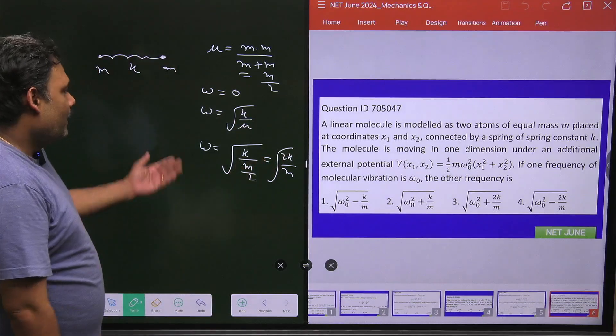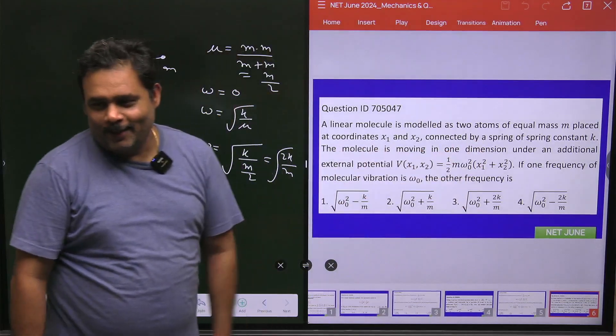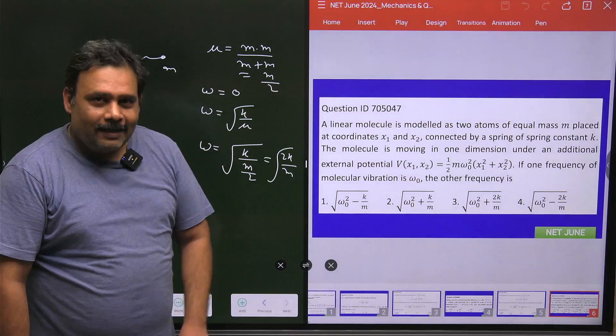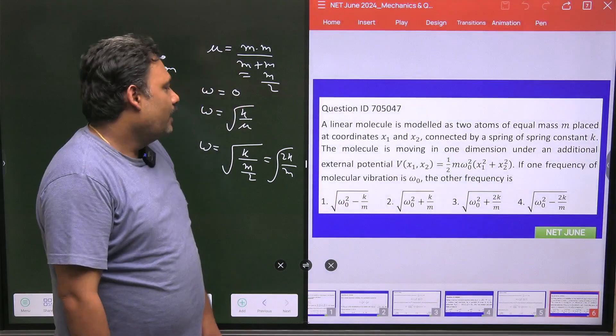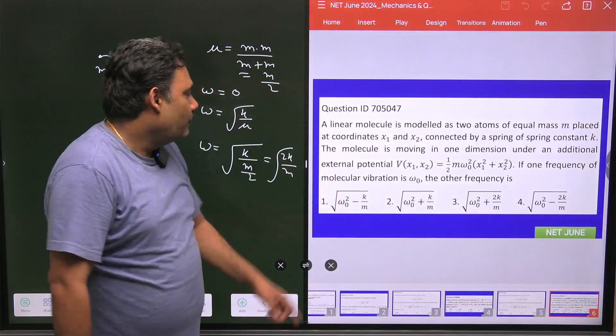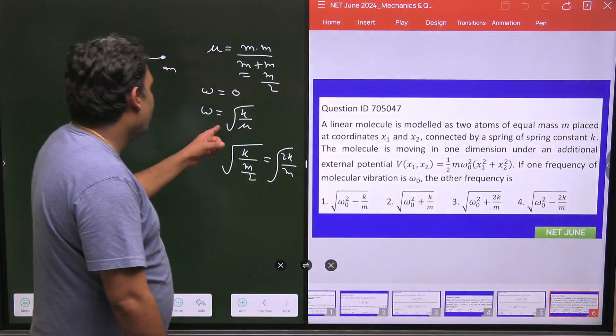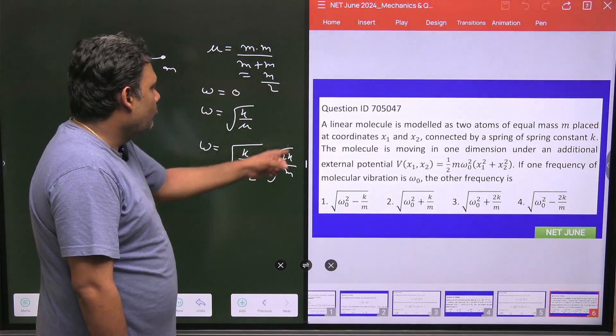Now you can see, if I neglect ω₀², then my answer must be: if I neglect ω₀², the answer must be 0 as well as √(K/M).